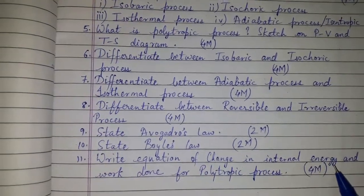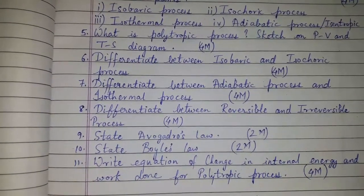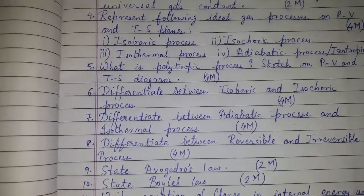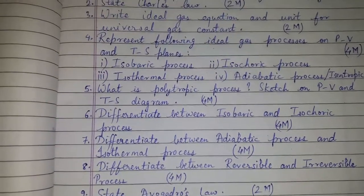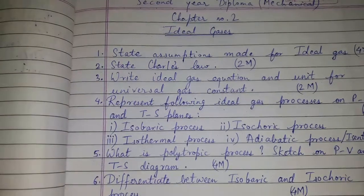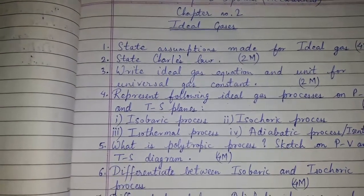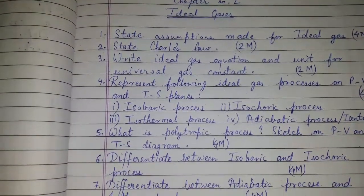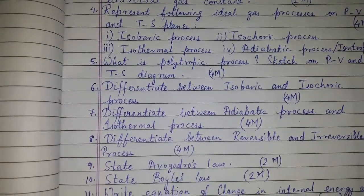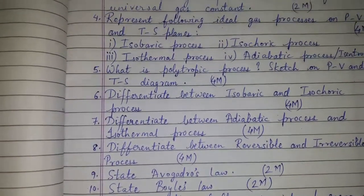State the equation of change in internal energy and work done for polytropic process for four marks. So these are the types of questions, or question bank, for chapter number two, Ideal Gases, along with the corresponding marks for which each can be asked.